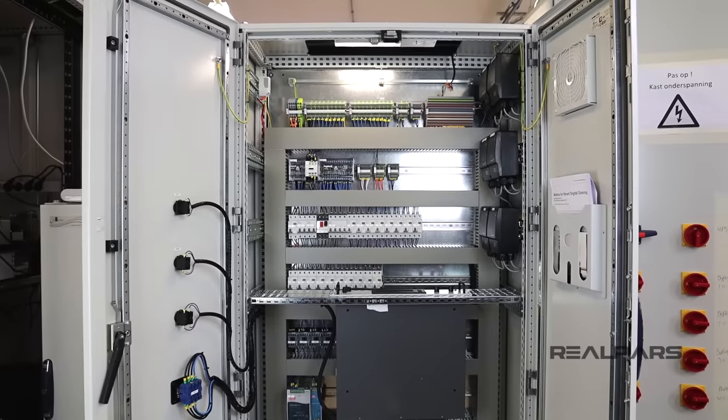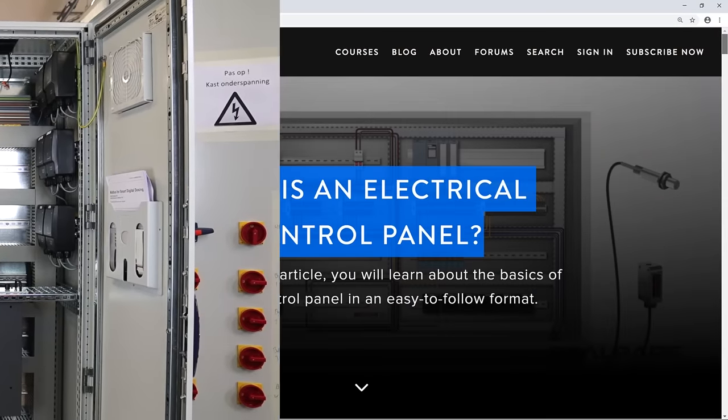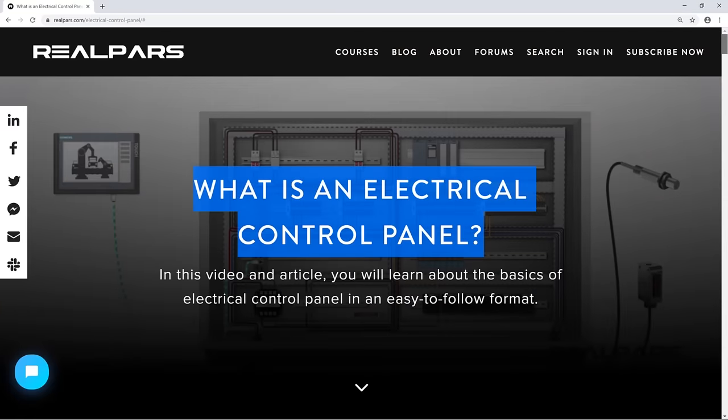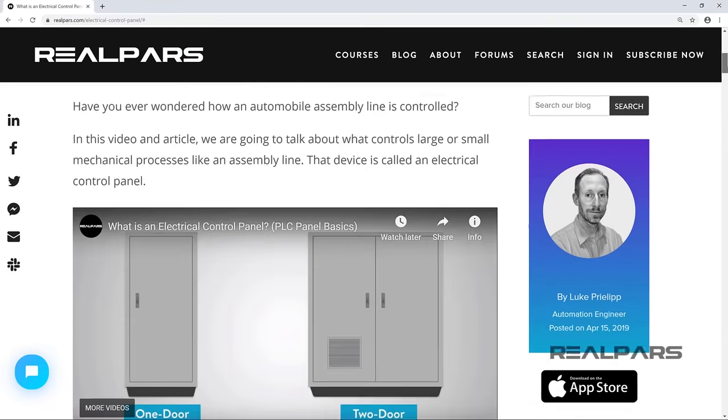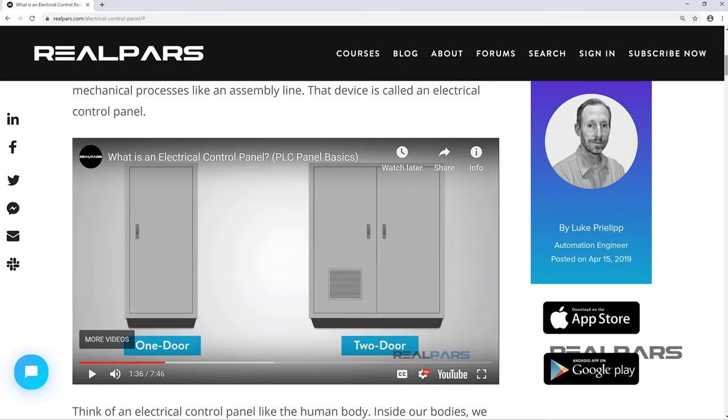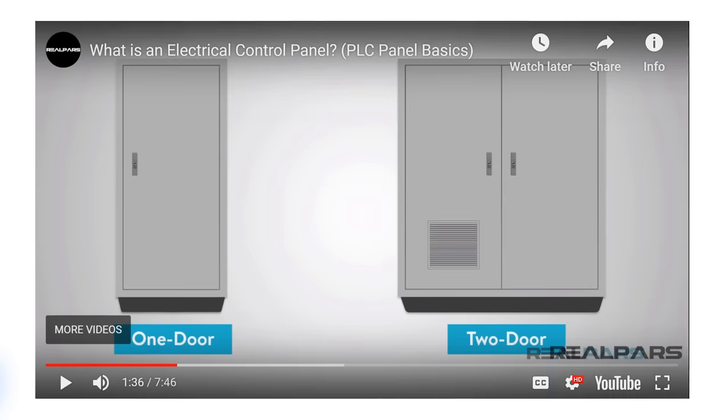This is a two-door control panel. As you may remember from the previous RealPars video about the basics of a control panel, we mentioned that we name control panels based on the number of doors that they have.